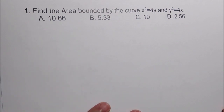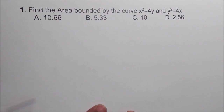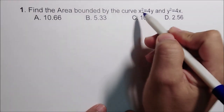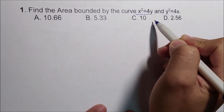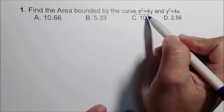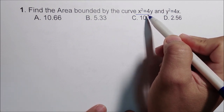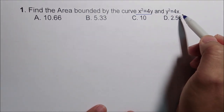Let's have an example. Find the area bounded by the curves x squared equals 4y and y squared equals 4x. Both are parabolas. The first, x squared equals 4y, is a parabola that opens upward with vertex at (0, 0). The second, y squared equals 4x, is a parabola that opens to the right with vertex at (0, 0).